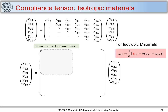To find the contribution of normal stresses σ₁₁, σ₂₂, σ₃₃ towards ε₁₁, I can rewrite the relation as: ε₁₁ = (1/E)σ₁₁ − (μ/E)σ₂₂ − (μ/E)σ₃₃. Looking at this, the first term relating ε₁₁ to σ₁₁ is 1/E, the second term relating ε₁₁ to σ₂₂ is −μ/E, and the third term relating ε₁₁ to σ₃₃ is also −μ/E.